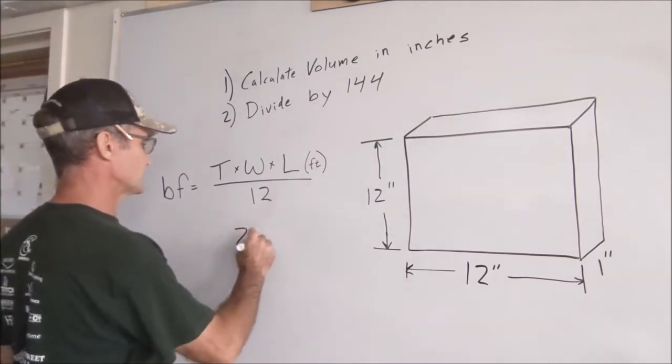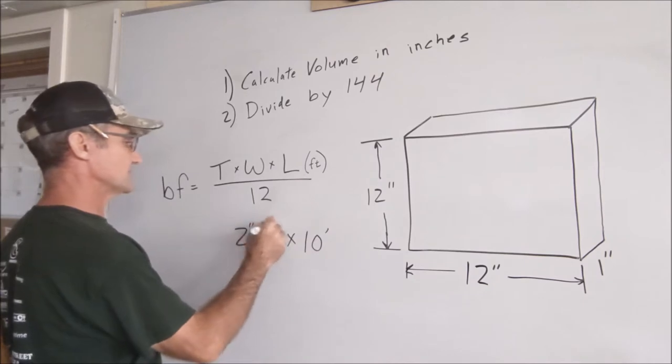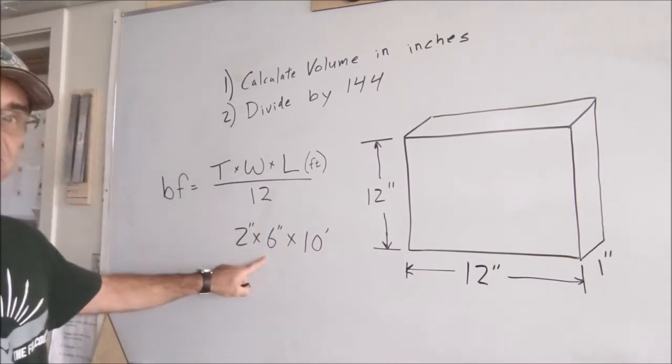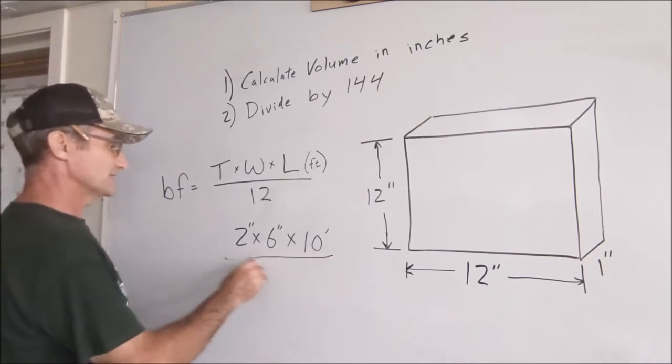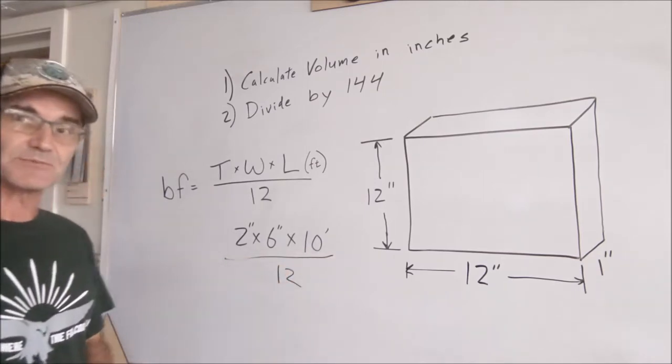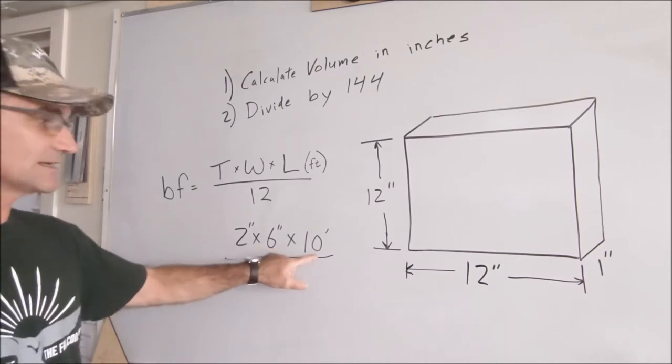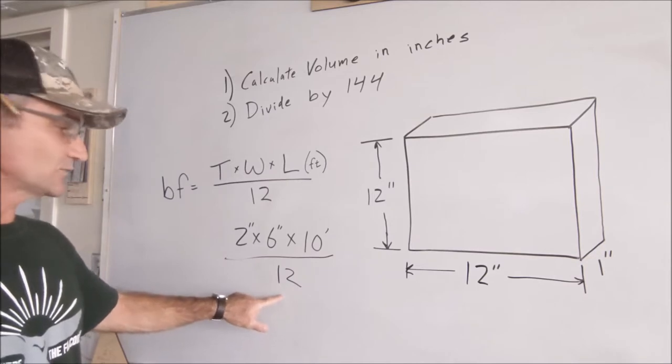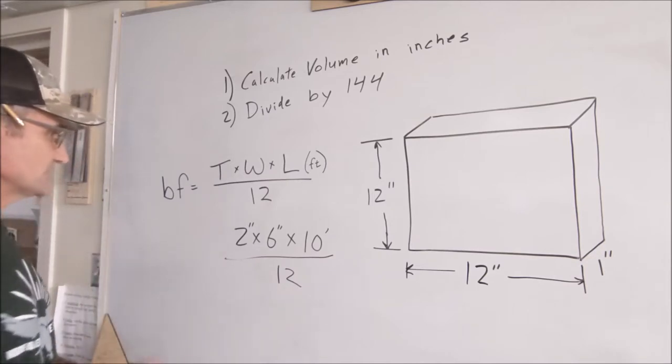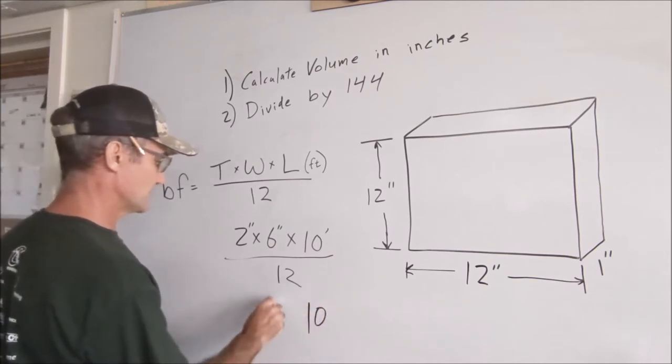So if, say, you have a two by six ten feet long, so units are key here. I have two inches by six inches by ten feet long. I take that number and I divide it by twelve and that'll give me my board feet. So a two by six is twelve times ten is a hundred and twenty divided by twelve is ten. So a two by six, ten feet long, is ten board feet.